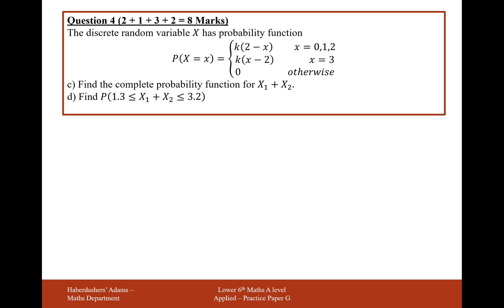Moving on to Part C now. Find the complete probability function for X1 plus X2. What this is, is a table of probabilities for the whole probability function. What we could do here is draw ourselves out a grid. We've only got the values 0, 1, and 3 available to us. So what are our outcomes?